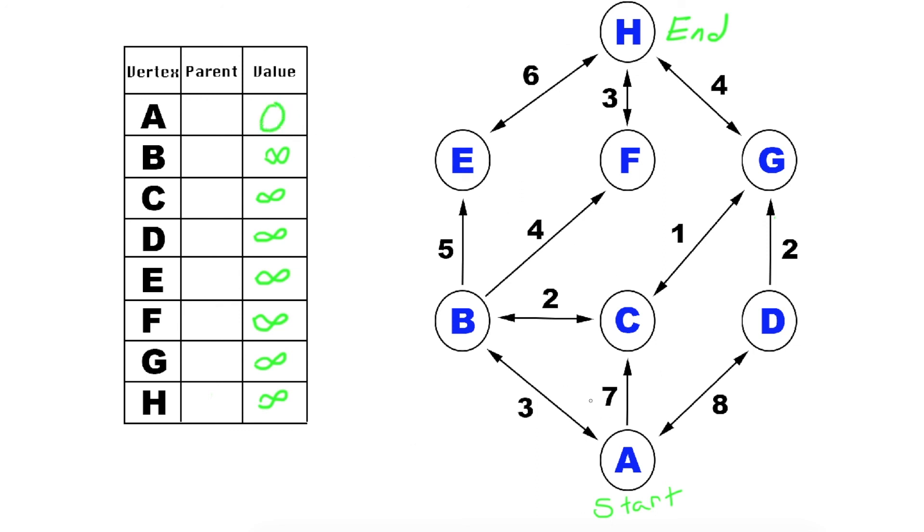Now we go through and find the shortest distance. So 3 is the smallest out of 7 and 8, so we go up here to B, and we make A the parent, get rid of infinity, and we make the new smallest value 3. Now we go 7, because it's smaller than 8. Get rid of that. The parent of C is now A, with a value of 7. And then we do the same thing with D. The parent of D is now A, and the value is going to be 8. So there's nowhere else to go, so we can just mark it off as visited.